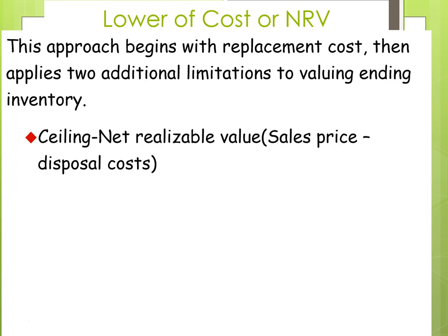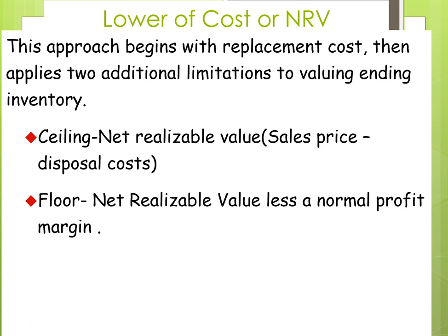The ceiling is the net realizable value, which is the sales price minus disposal costs. The floor is the net realizable value which is the ceiling less a normal profit margin. The rule is that the price has to fall within this range — it cannot be higher, it cannot be lower. So if the net realizable value is higher than the ceiling, we use the ceiling. If it's lower than the floor, we use the floor. And if it's in the middle, that's the number we use.